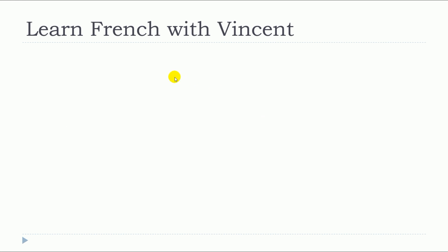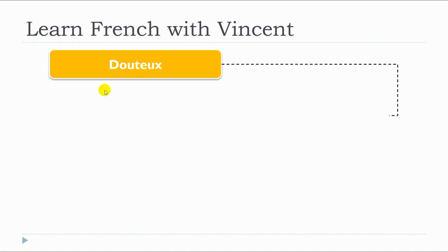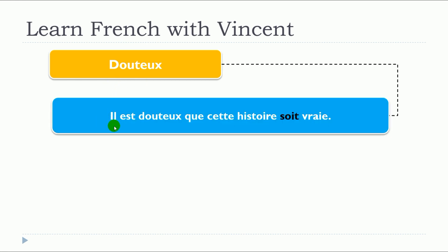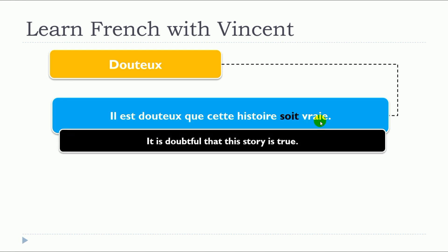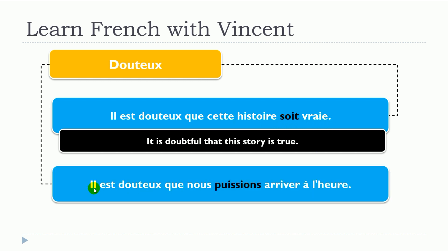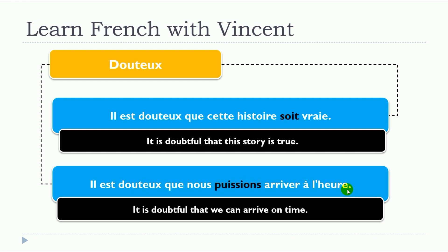So we will see some examples with « douteux ». Il est « douteux » que cette histoire soit vraie. Il est « douteux » que nous puissions arriver à l'heure.